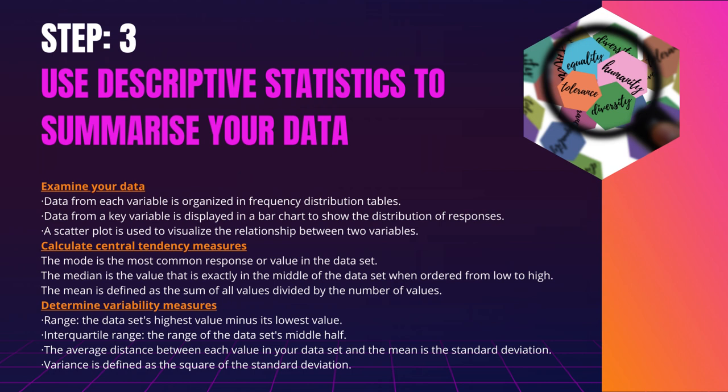You can assess whether your data has a skewed or normal distribution and whether there are any outliers or missing data by visualizing it in tables and graphs. A normal distribution means that your data is symmetrically distributed around a center where the majority of the values are concentrated, with values tapering off at the tail ends. A skewed distribution, on the other hand, is asymmetric and has more values on one end than the other. Only a few descriptive statistics should be used with skewed distributions, so keep the shape of the distribution in mind.